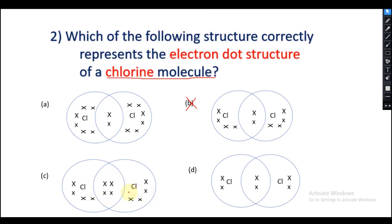Let me check the third option: it shows 2, 4, 6, and 8 for each chlorine, but there is a single bond between the two chlorine atoms and 4 electrons are shared — so this option is also wrong. Checking the last one: it only shows 2 and 4, so this is also wrong. Therefore option E is the correct answer.